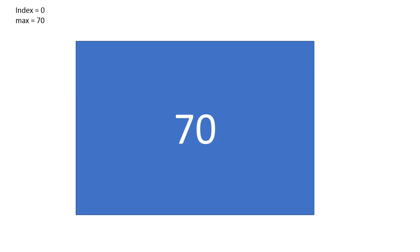We still have other elements to go, so we move to the next element. Our max value is still 70, but now we come across the element 85. We have to ask: is 85 greater than our current max? Our current max is 70 — the zeroth element — and yes, 85 is greater than max. So 85 becomes our new max.